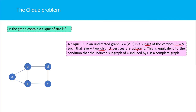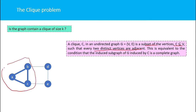For example, consider this graph. This graph has a clique of size 3 because these three vertices are all adjacent to each other — you can go from A to B as well as C, C is adjacent to A and B, and B is adjacent to A and C. So this is a complete subgraph, and a complete subgraph of a graph is a clique.